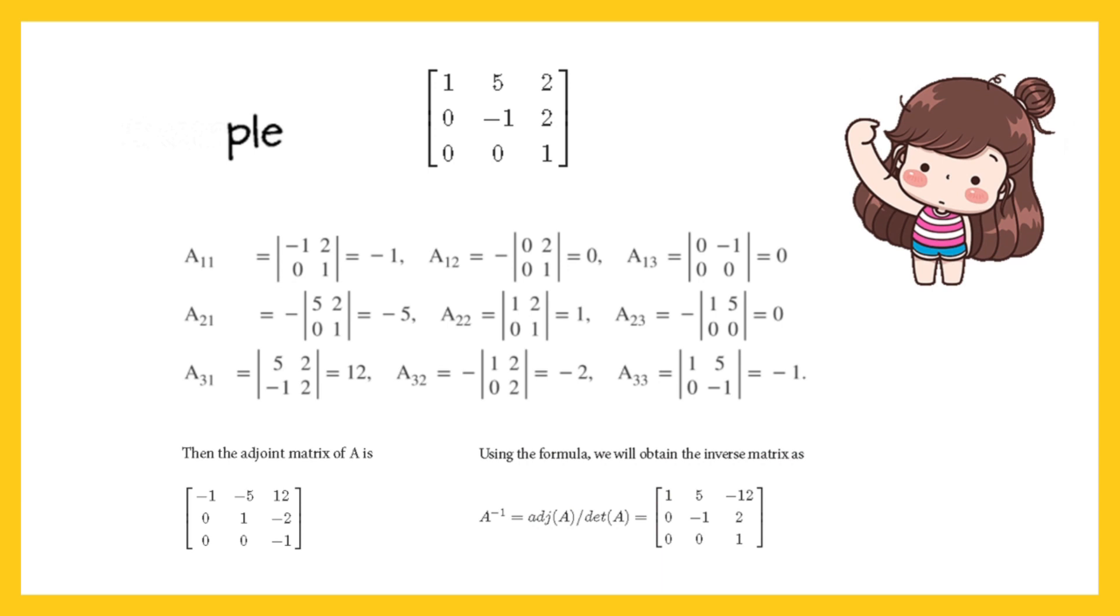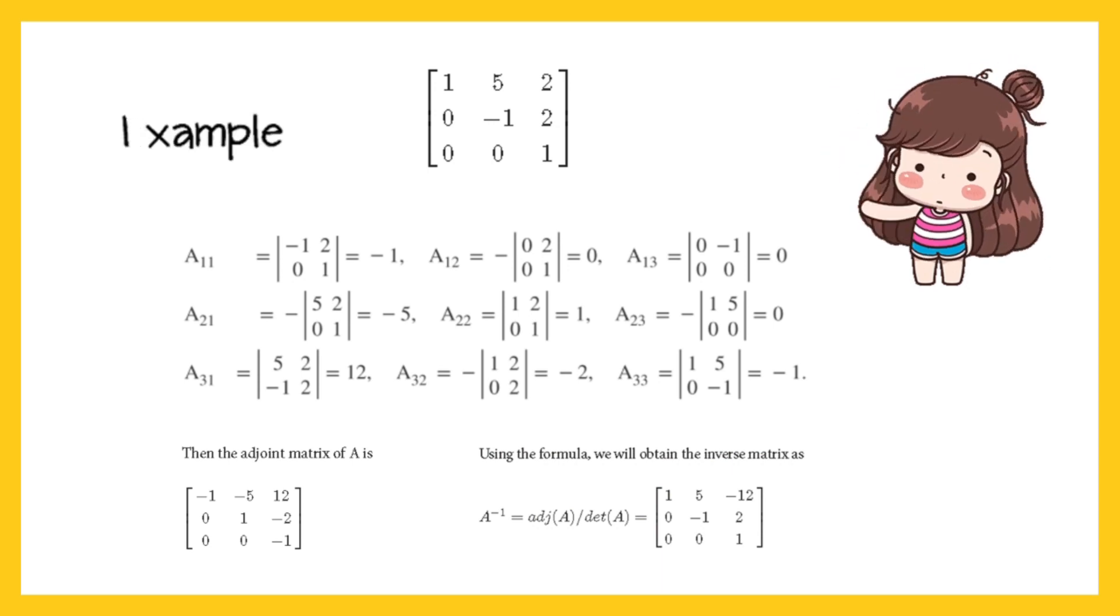Properties of inverse and adjoint of a matrix. Property 1: For a square matrix A of order n, A·adj(A) equals adj(A)·A equals determinant A times I, where I is the identity matrix of order n.